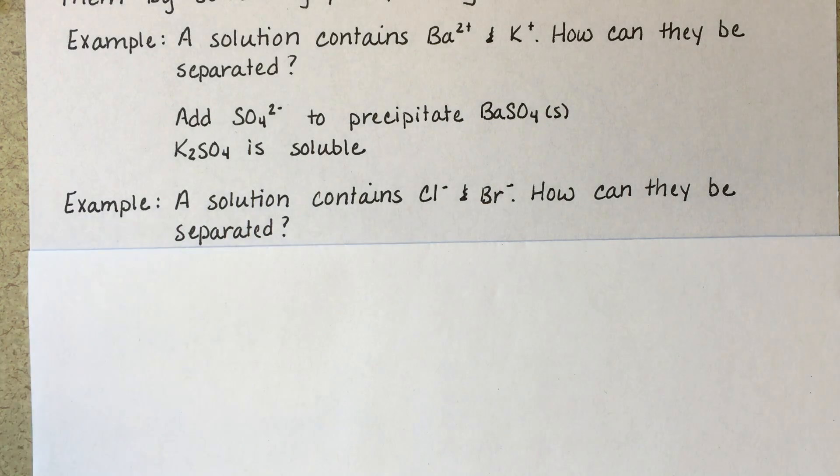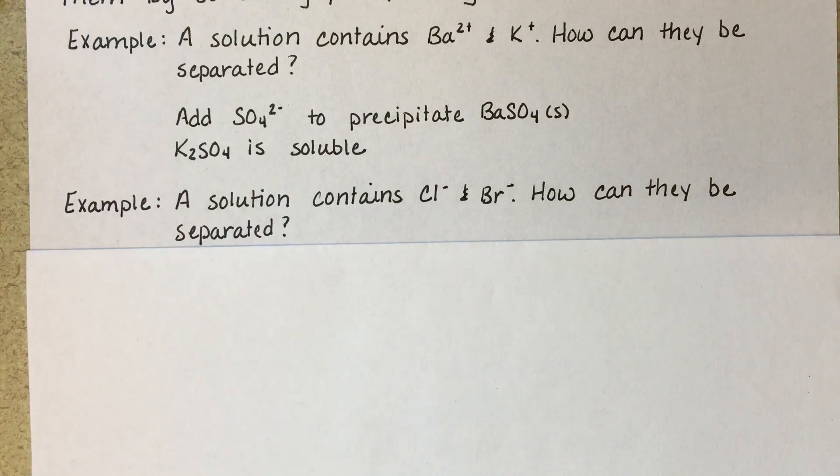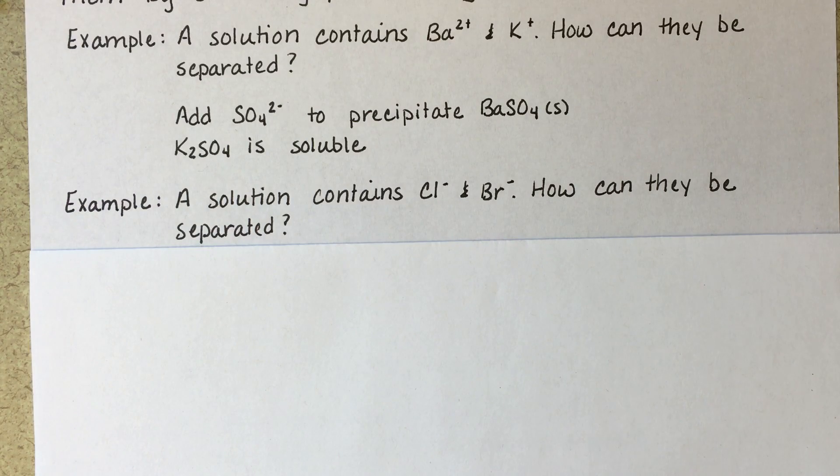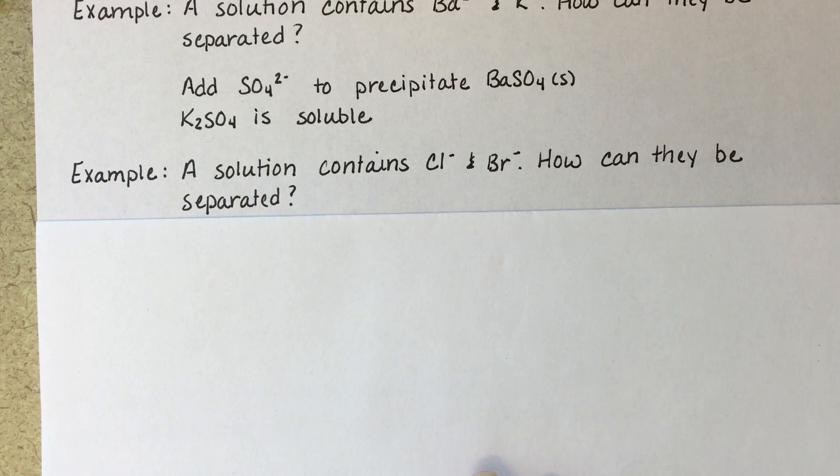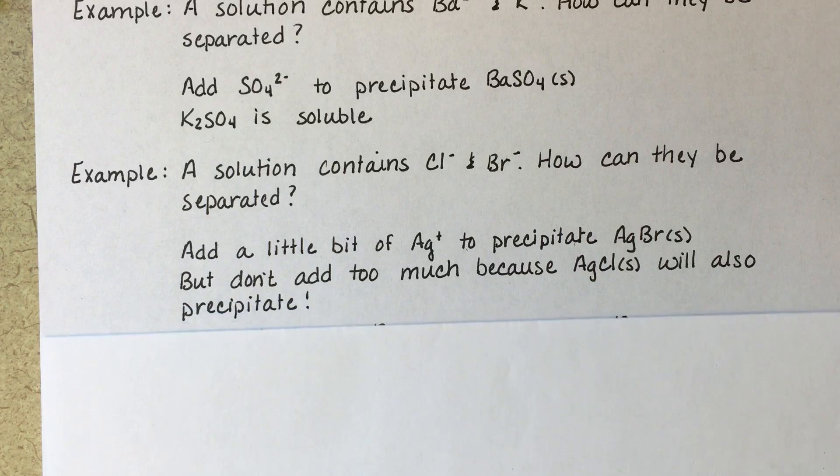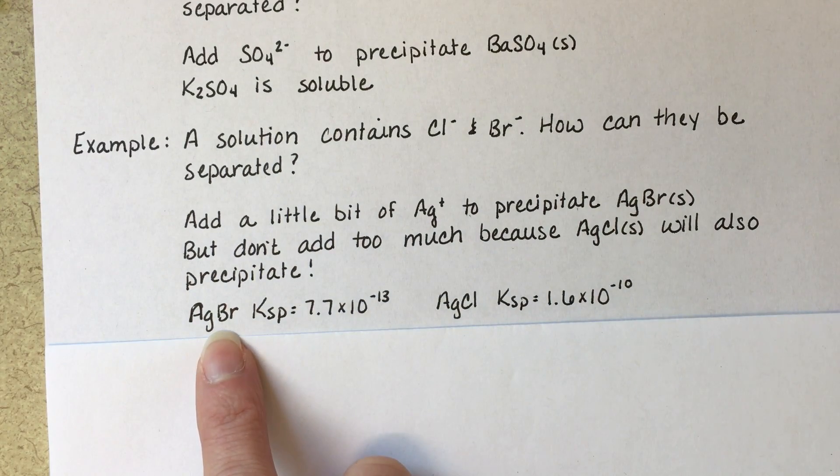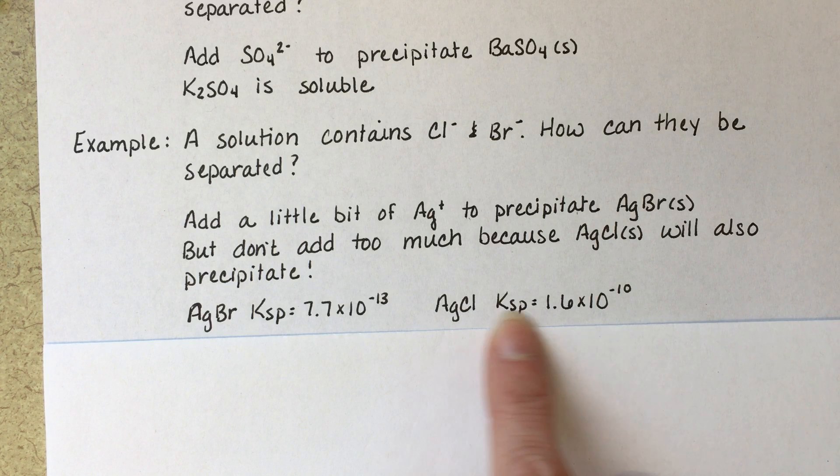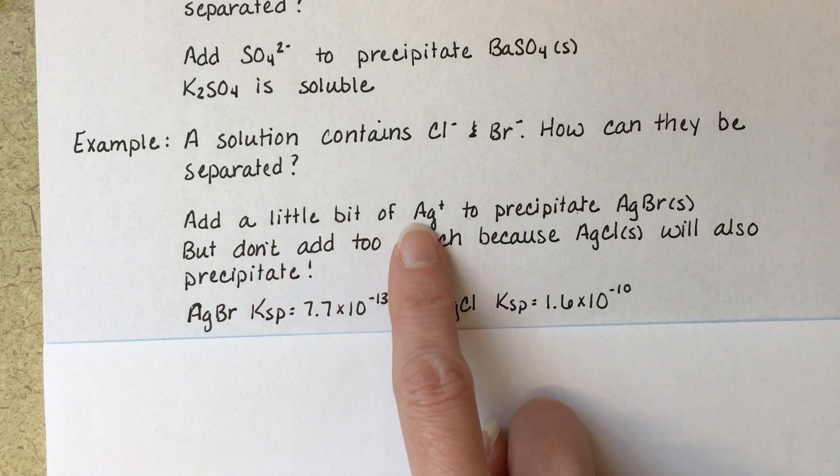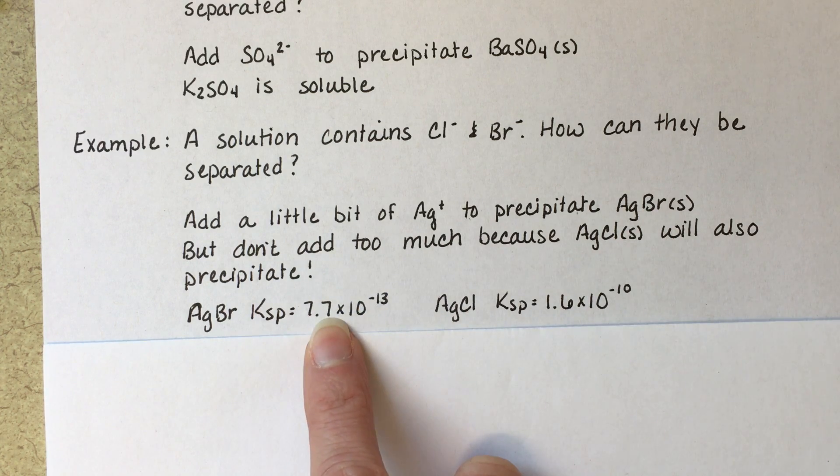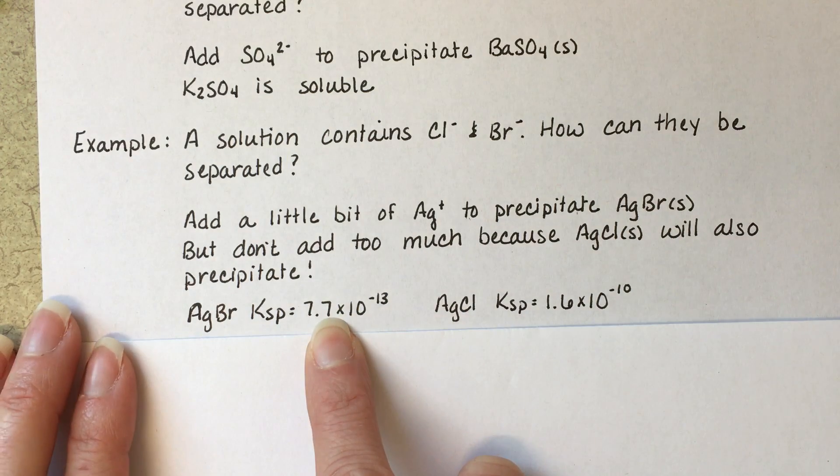We're going to have to use a cation that will actually precipitate both chloride and bromide. But we can take advantage of the fact that they have different KSP values and different levels of solubility. Because silver bromide has a smaller KSP than silver chloride, if we add only a little bit of silver ion, we'll precipitate the silver bromide because it is less soluble and it will form a solid first.